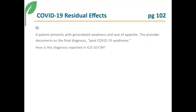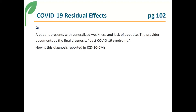The patient presents with generalized weakness and loss of appetite, and the provider documents the diagnosis as post-COVID-19 syndrome. How is this reported in ICD-10-CM? Coding Clinic advises to report codes R53.1 weakness and R63.0 anorexia.